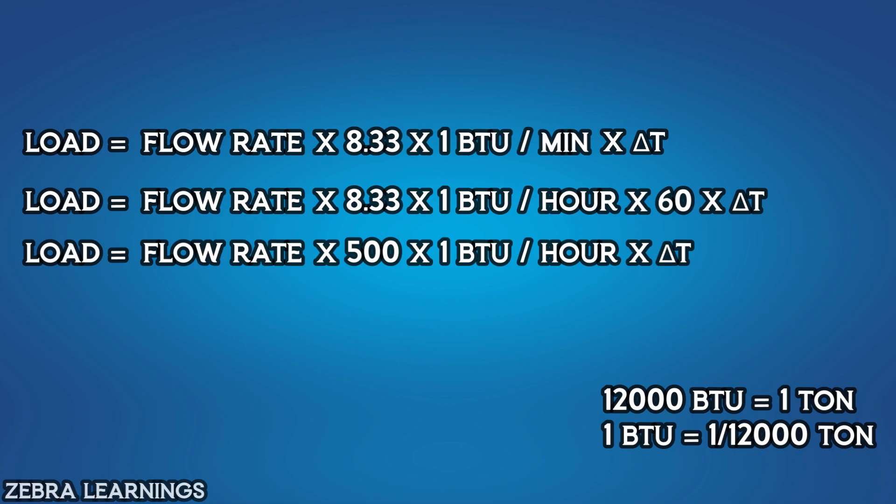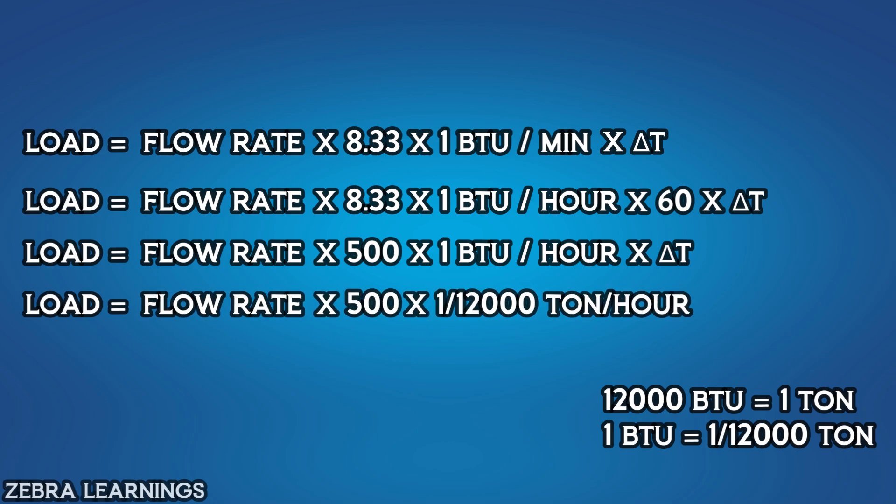Let's use this value in the formula. Load equals flow rate multiply 500 multiply 1 by 12,000 ton per hour in place of 1 BTU, multiply delta T.